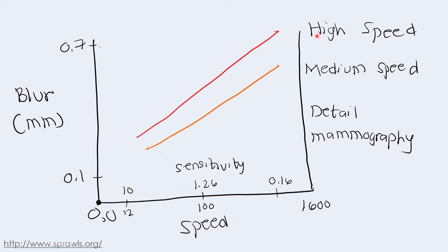We have this classification or five generic types of screens that includes the mammographic, peak, the detail, somewhere here we have the par speed, medium speed, and high speed.